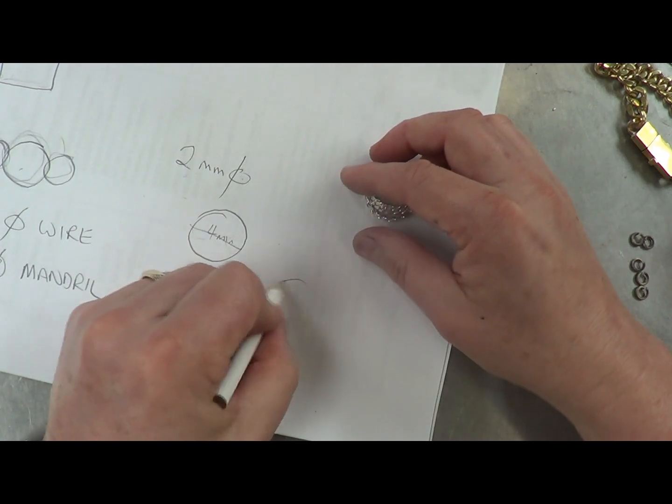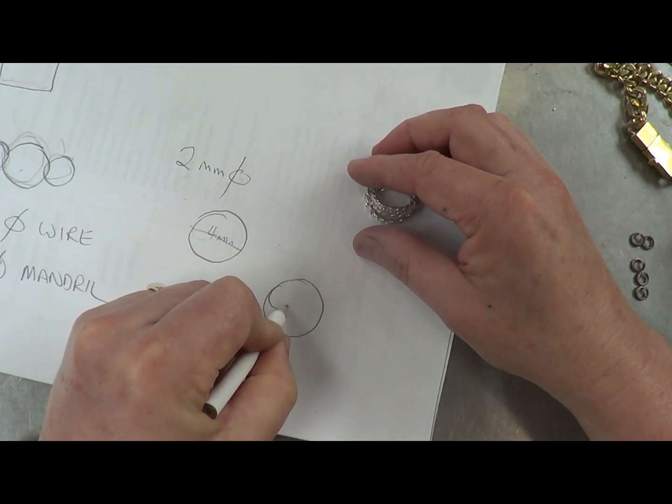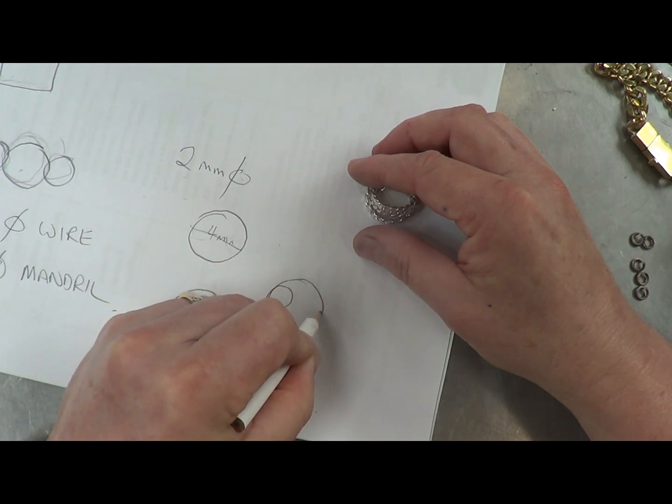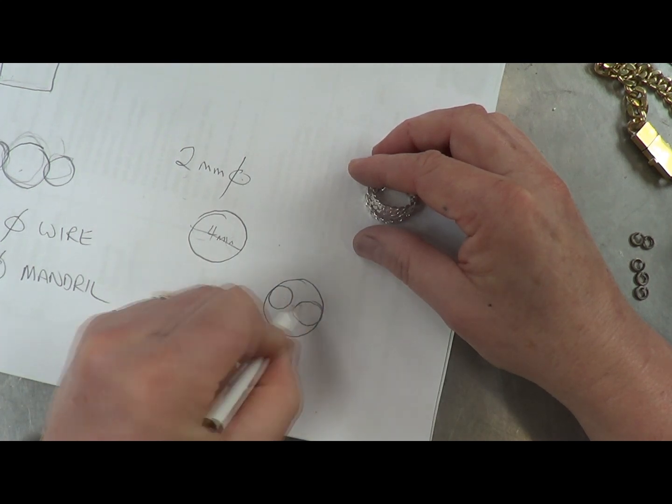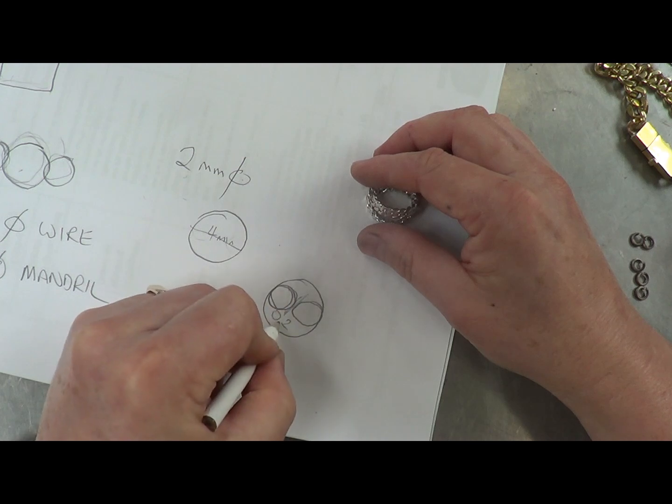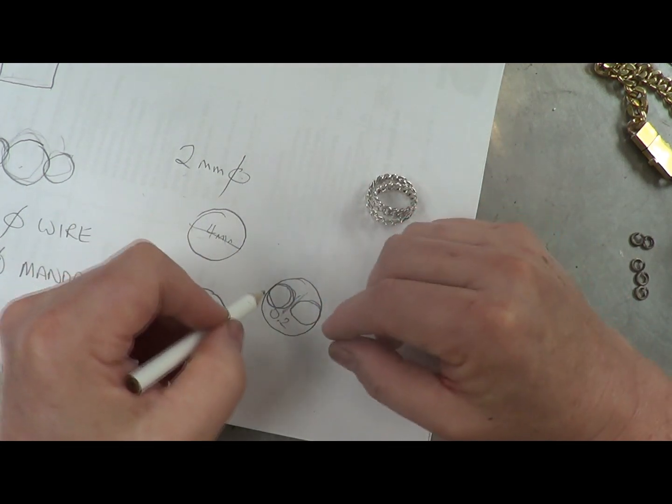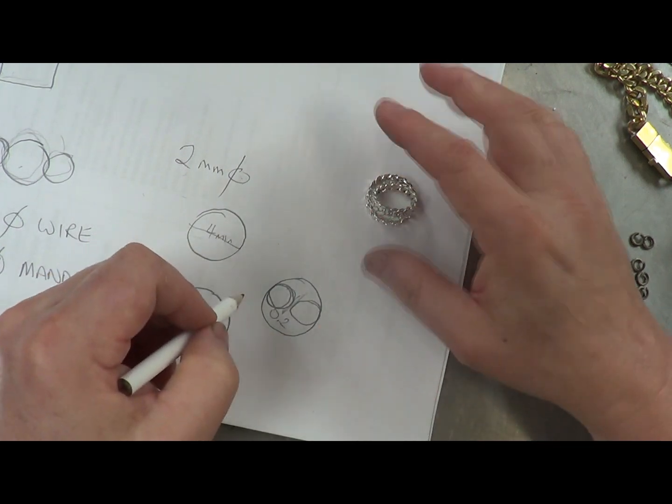So if I've got my mandrel here and it's 4.2, I've got a 2 mill wire there and a 2 mill wire here. Not quite right, but you get what I mean. It will have 0.2 millimetre of gap between them so I can easily enough fit so they're not binding on each other when I put the two links together.